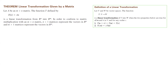Theorem: Linear transformation given by a matrix. Now that we've learned about matrices and matrix operations, we want to know the connection between matrices and linear transformations. Suppose A is an m by n matrix. Then the function T, defined by T(v) = Av, takes vectors from the first vector space and multiplies them by matrix A — this is a linear transformation from Rⁿ to Rᵐ.